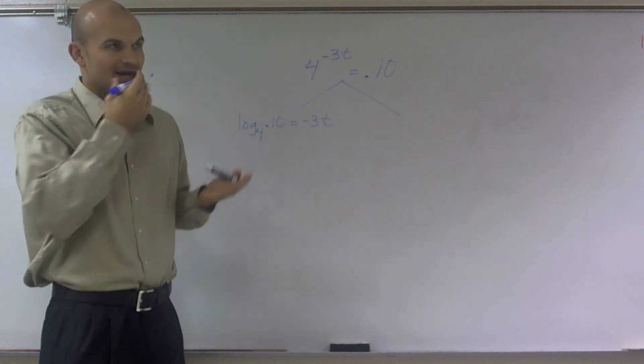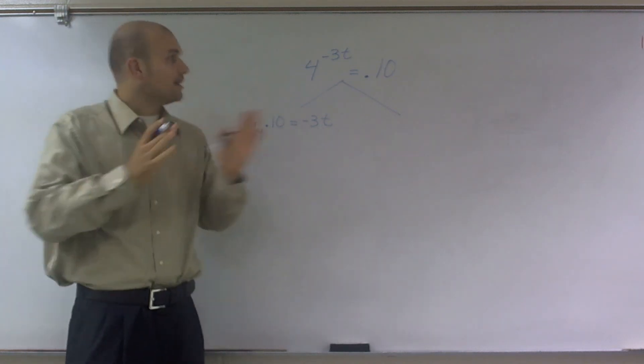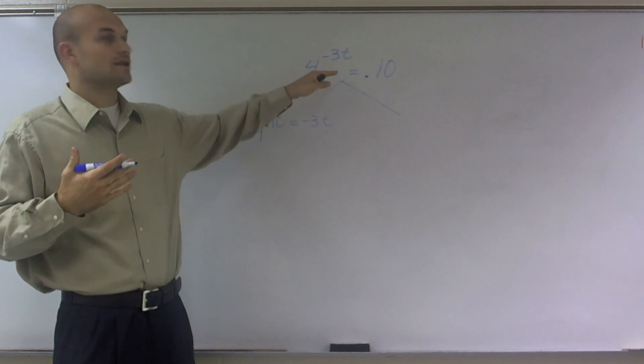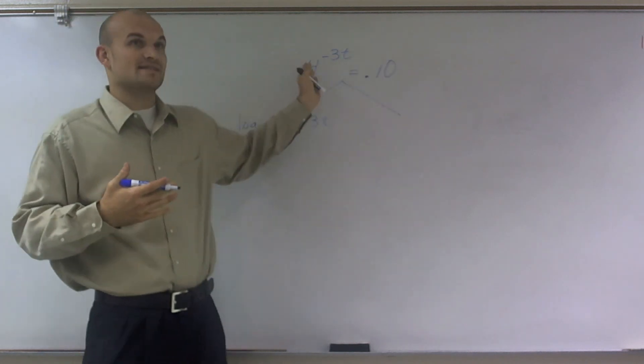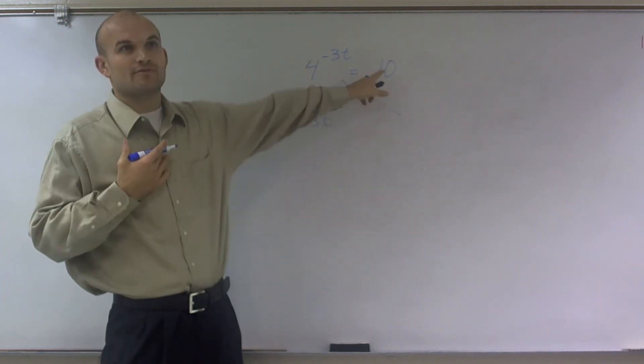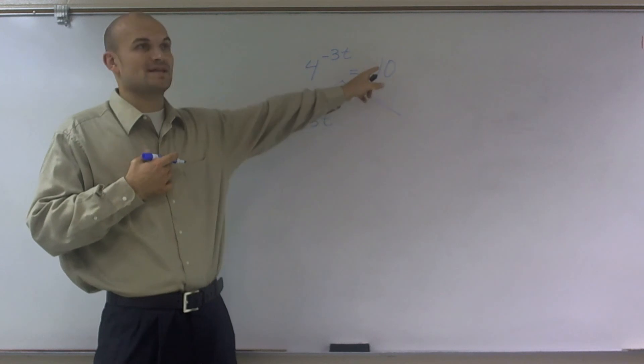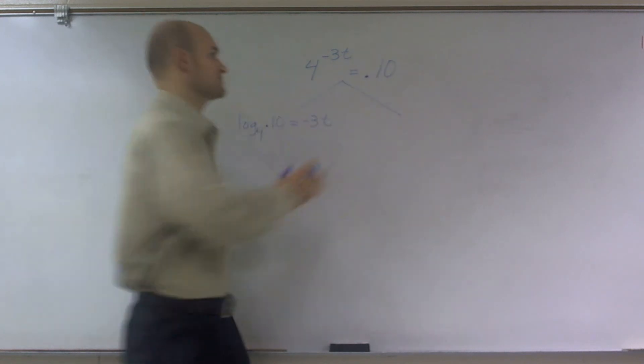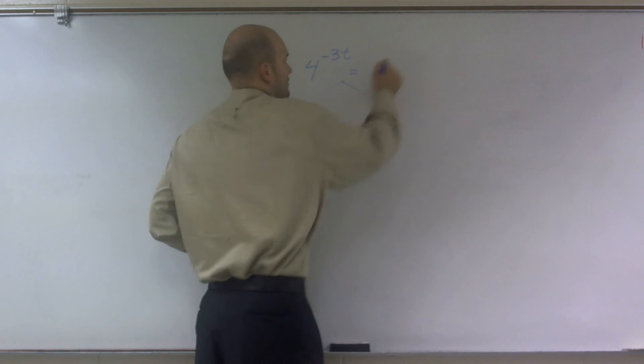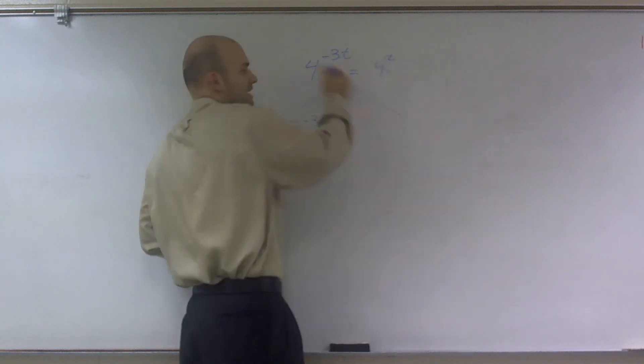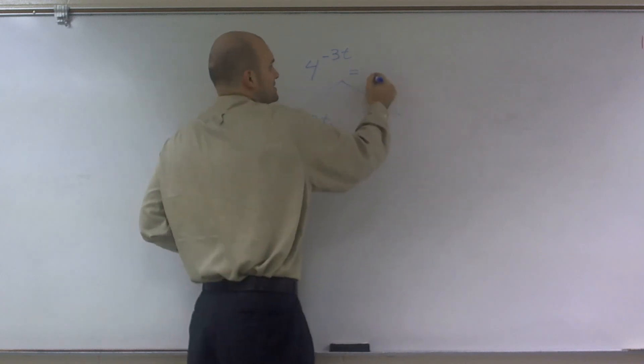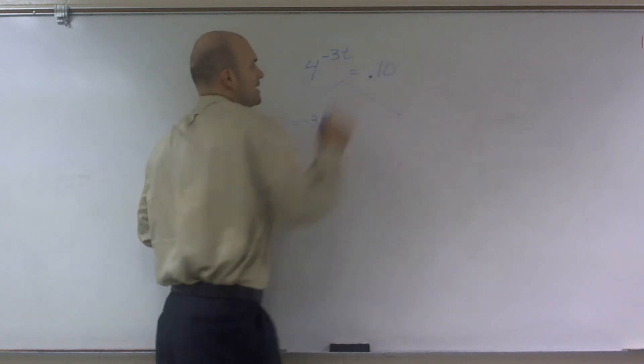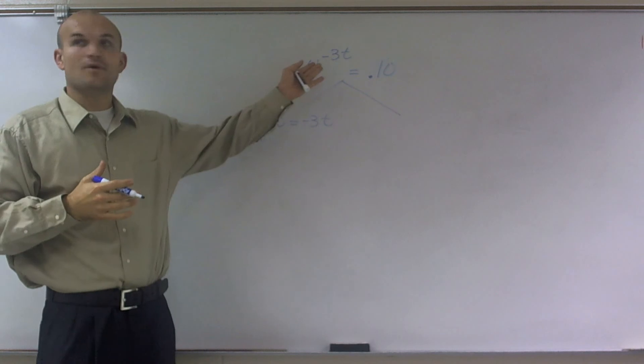Now, actually, let me think about this. First of all, the first thing I'd always want to look at is see if I can make these the same base, base 4. However, I cannot rewrite 0.10 as a base 4. If this was like 16, I could rewrite that as 4 squared and cancel out the 4s. So you always want to look for that first.